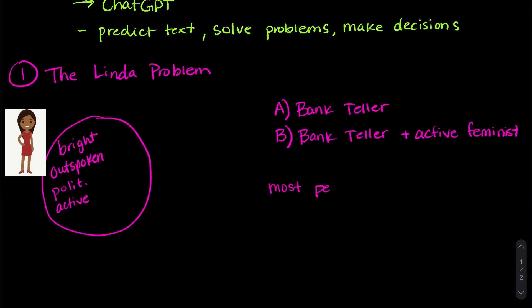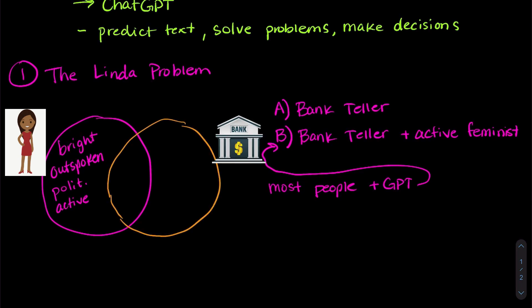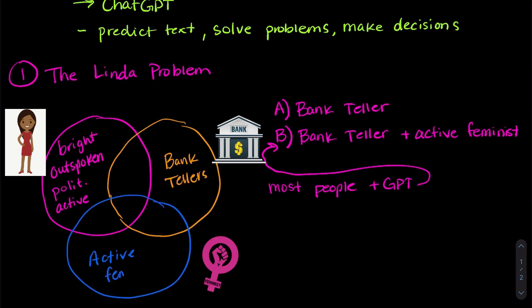Now most people and GPT choose the second option. Now the second option is actually not the most likely. So if we look at the people who are bank tellers, and the people who are active feminists, and the characteristics of Linda, this many people are going to represent those characteristics. Whereas if we're looking at just Linda and bank tellers, we're looking at a lot more people. So it's actually more likely that Linda is just a bank teller.